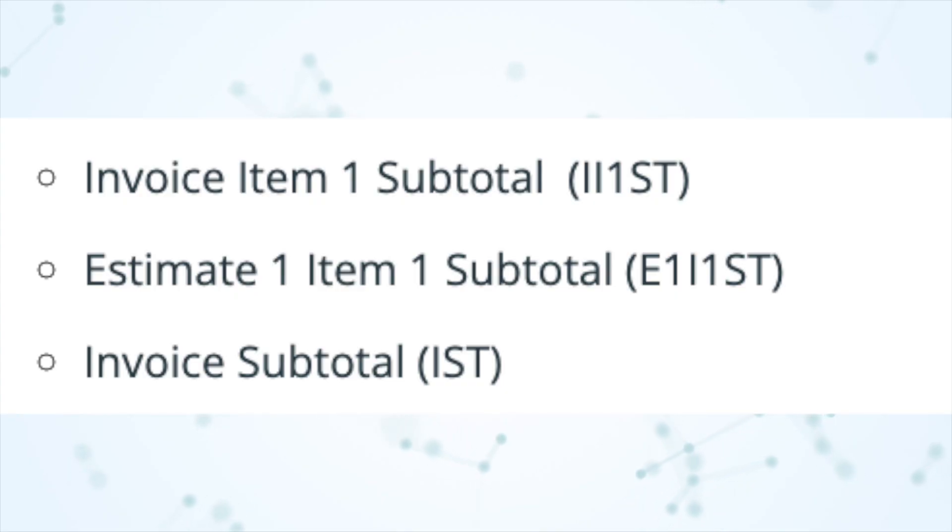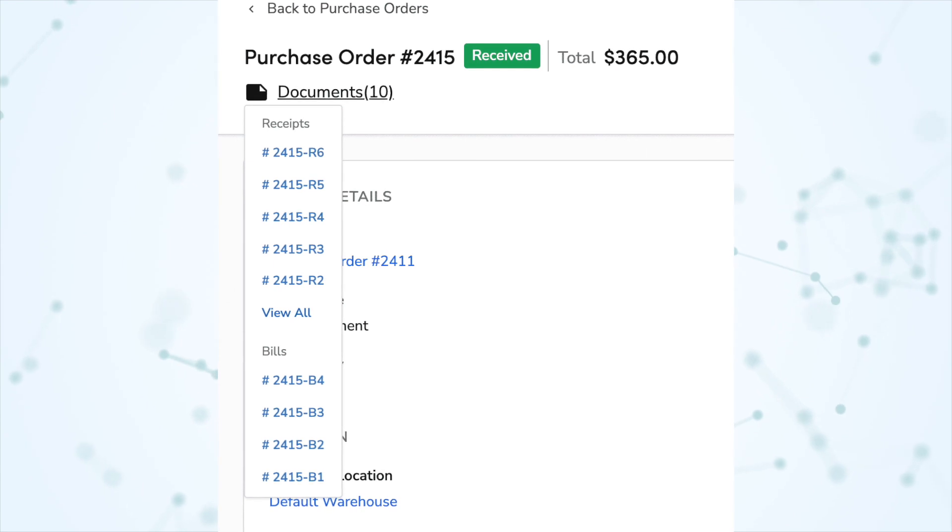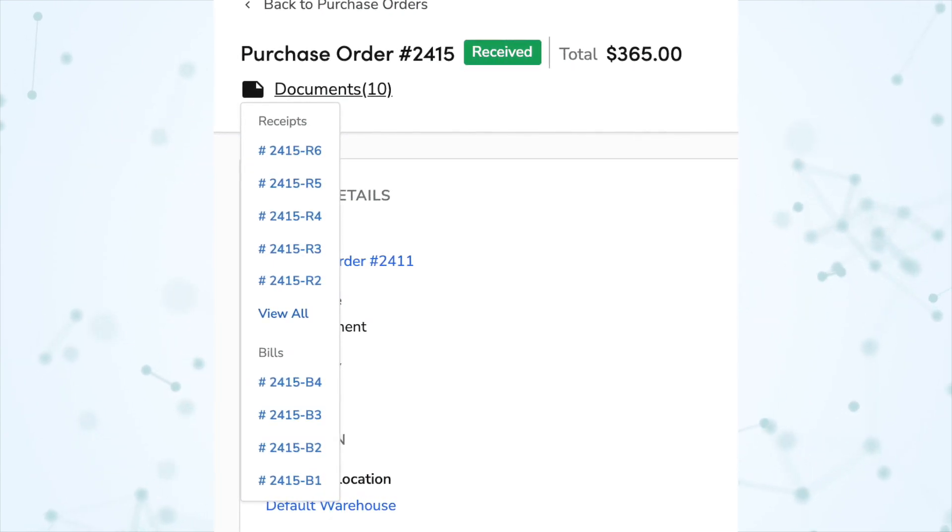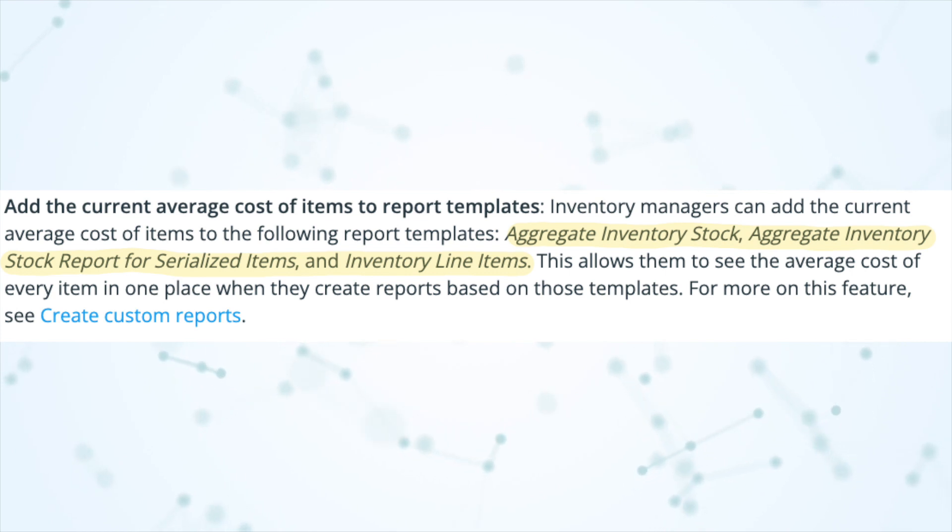Next under forms and media, there are additional smart fields in PDF forms — the new smart fields are: invoice item one subtotal, estimate one item one subtotal, and invoice subtotal. Under inventory, you can now view long lists of documents attached to purchase orders — clicking the documents link opens a list of up to five bills and five receipts with a link to view all. You can also now add the current average cost of items to report templates, including aggregate inventory stock, aggregate inventory stock for serialized items, and inventory line items.